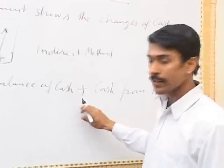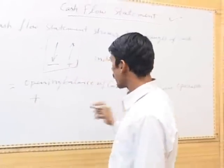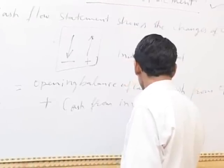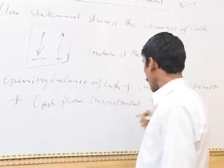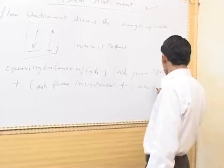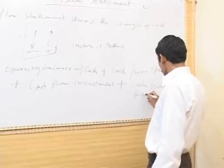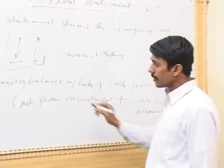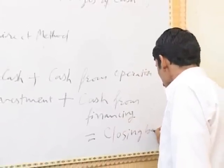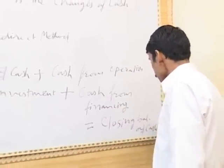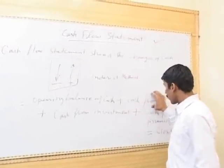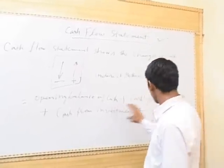We take the opening balance of cash, then add cash flow from operations. We also add cash from investment, and finally add cash from financing. The total will equal the closing balance of cash, which is shown in our cash book. So we need to calculate cash from operations, cash from investment, and cash from financing.